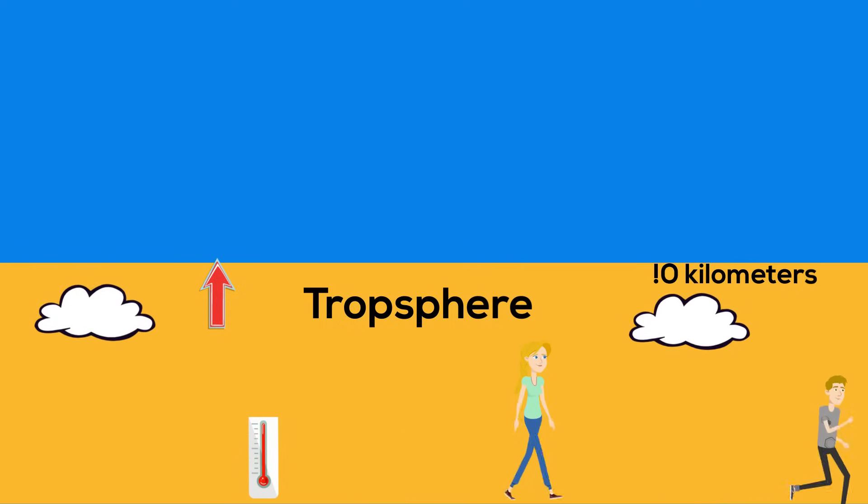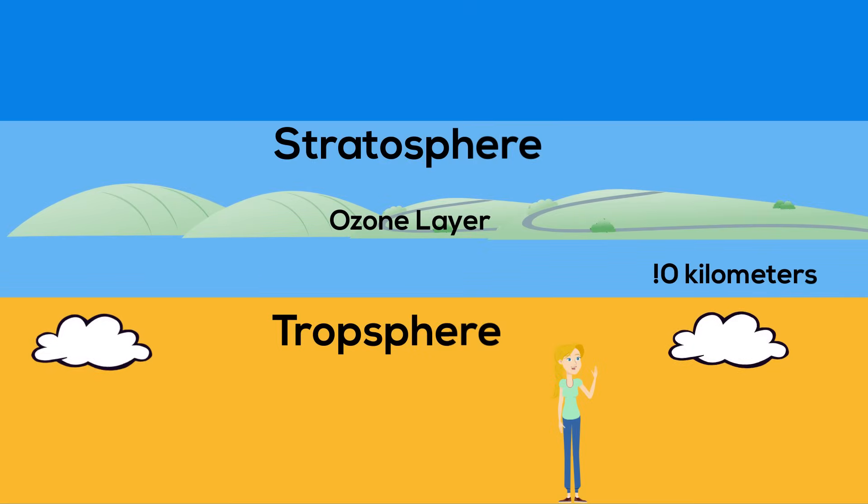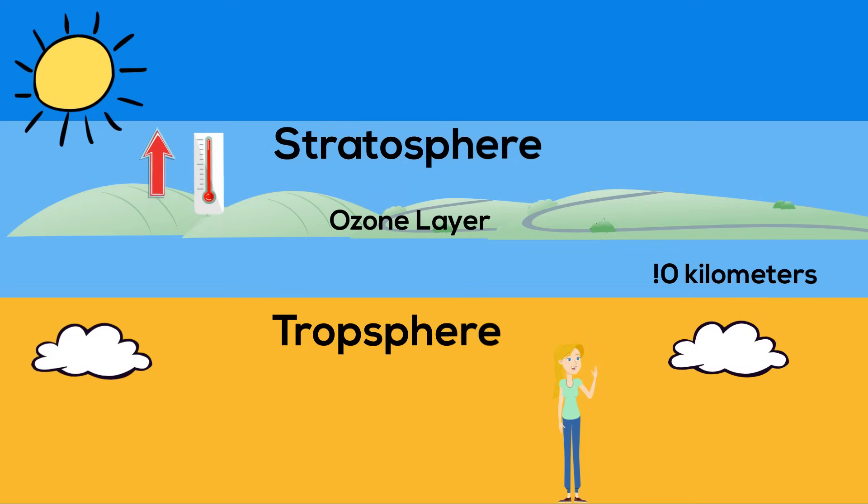At the very top of the troposphere temperatures drop to around negative 52 degrees Celsius. This begins our next layer called the stratosphere. The ozone layer is found in the stratosphere. The ozone layer protects us from ultraviolet rays given off from the sun. As you get higher in the stratosphere the temperature gets warmer. This is because the ozone layer absorbs ultraviolet rays and warms up.